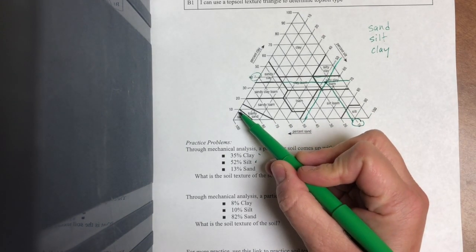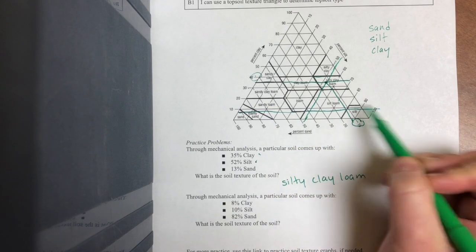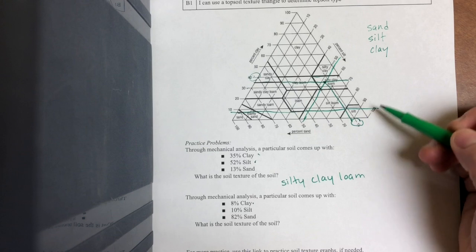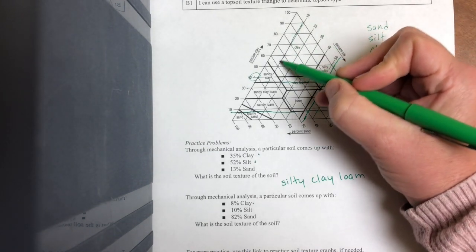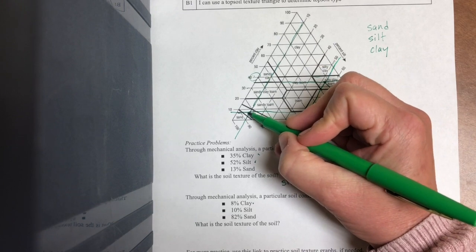8% clay is going to be right here, going straight across. So that's my 8% clay. 10% silt, so silt 10% all the way down here.